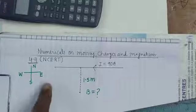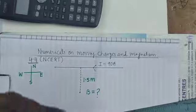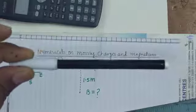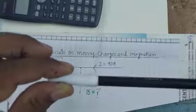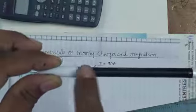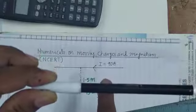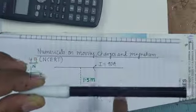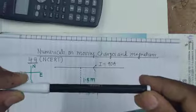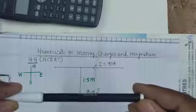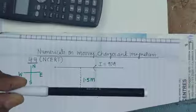To understand this practically: we have the east-west and north-south directions marked. This is an overhead wire carrying electric current from east to west. Point B is located vertically below the overhead wire — that is the point at which we need to find the magnetic field.